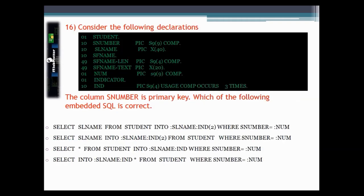This question asks: consider the following declaration of working storage variables where column S_NUMBER is a primary key — which of the following embedded SQL is correct if you want to write a SELECT statement in a COBOL program? Going through the syntax, the correct answer is: SELECT column_name INTO host_variable followed by the null indicator FROM table_name followed by the WHERE clause.